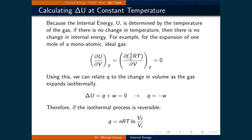Let's now look at what happens for isothermal processes. Because the internal energy is determined by the temperature of the gas, if there is no change in temperature, then there is no change in the internal energy. For example, let's look at the expansion of one mole of a monatomic ideal gas. Monatomic gases only have translational degrees of freedom, where each axis contributes one-half RT to the total energy, meaning that the total energy is three-halves RT. Note that it isn't dependent upon the volume or the pressure, so taking the derivative of three-halves RT with respect to volume, because the gas is expanding and we're holding this at constant temperature, then this derivative is equal to zero.